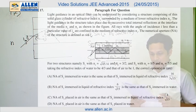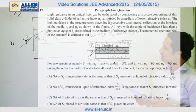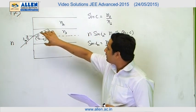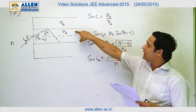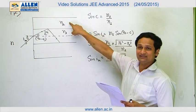Question number 17 and 18. Light guidance in an optical fiber can be understood by considering a structure comprising of thin solid glass. We have a solid glass sphere of refractive index N1 surrounded by a medium of refractive index N2, where N2 is less than N1.